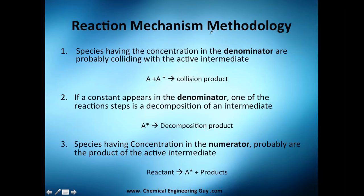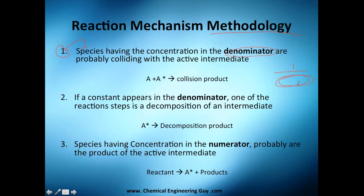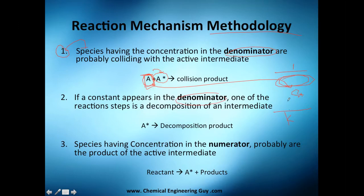The actual methodology is straightforward. Step one comes from what we did in the last video — if you haven't seen it, go back and watch it first. Species having concentration in the denominator are probably colliding with the active intermediate. So if CA appears in the denominator, A is likely colliding with the active intermediate.